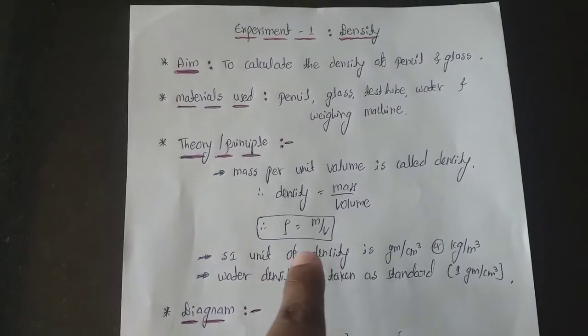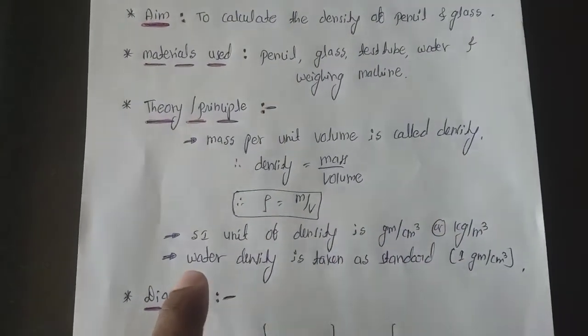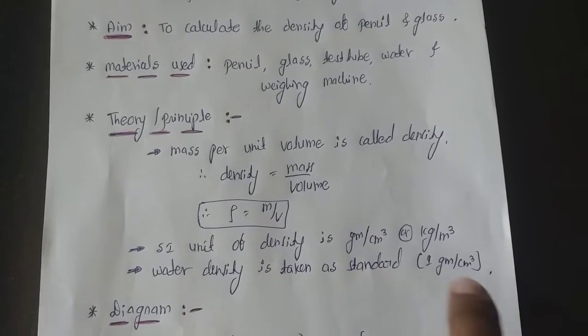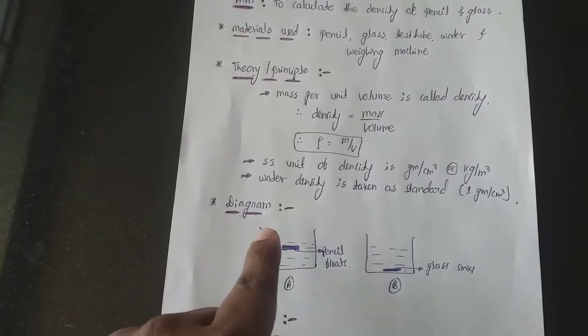Then SI unit of density is gram per centimeter cube or kg per meter cube, and water density is taken as a standard, that is 1 gram per centimeter cube. After the principle, you should draw the diagram.